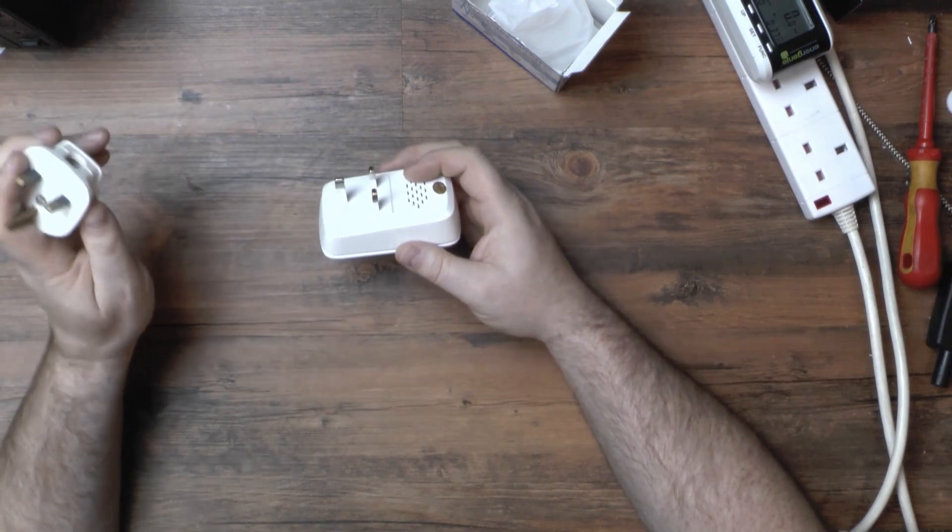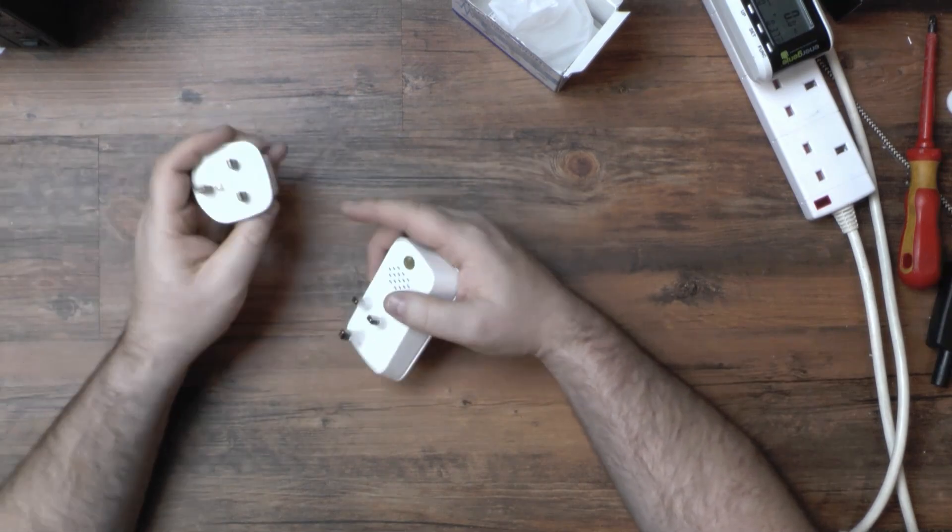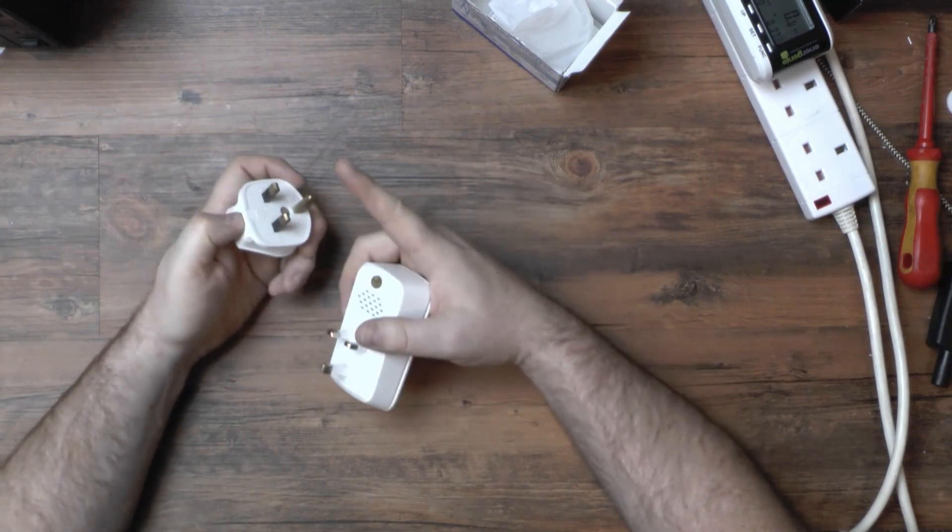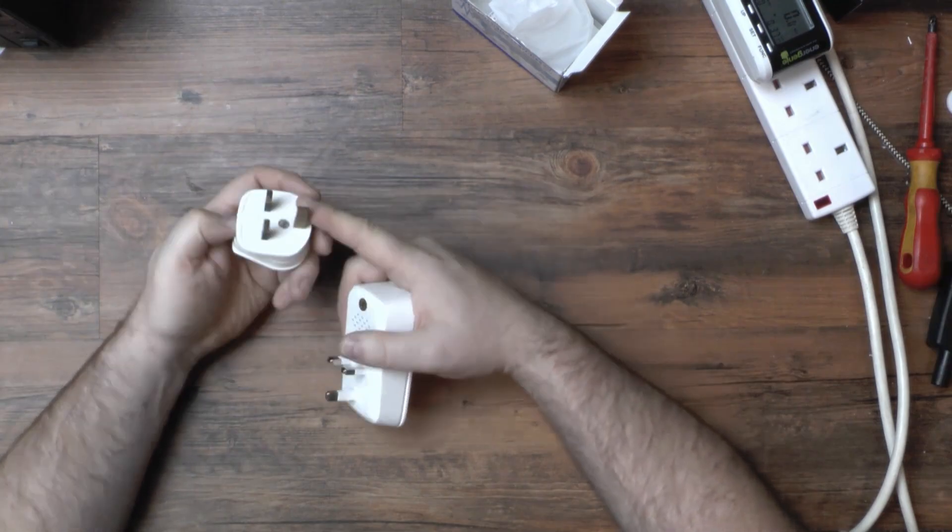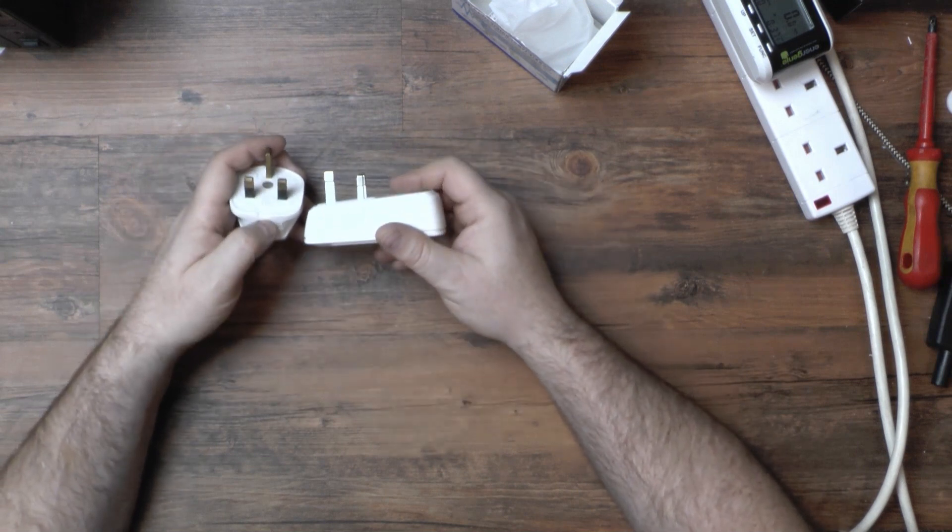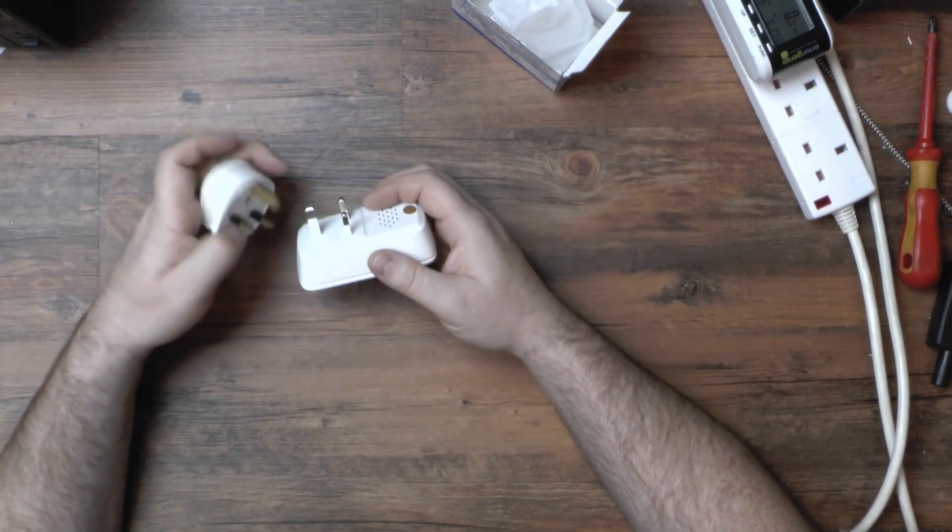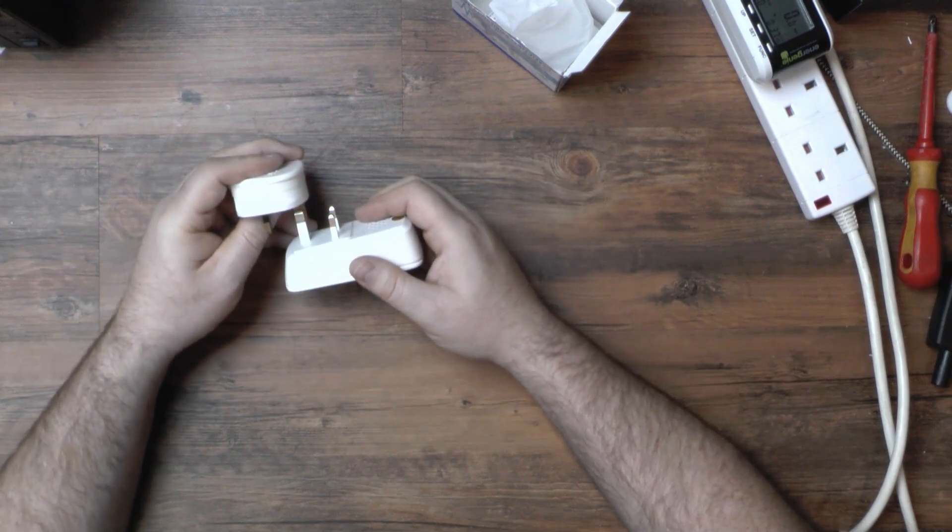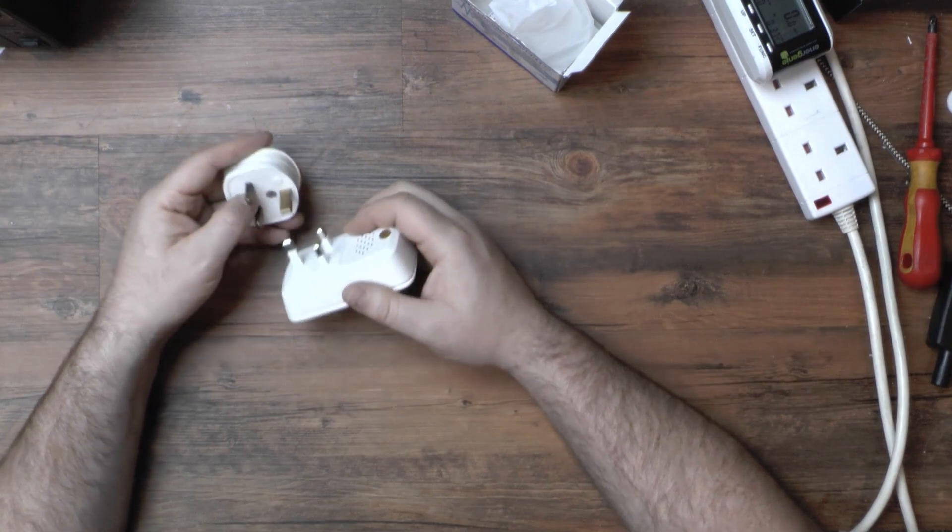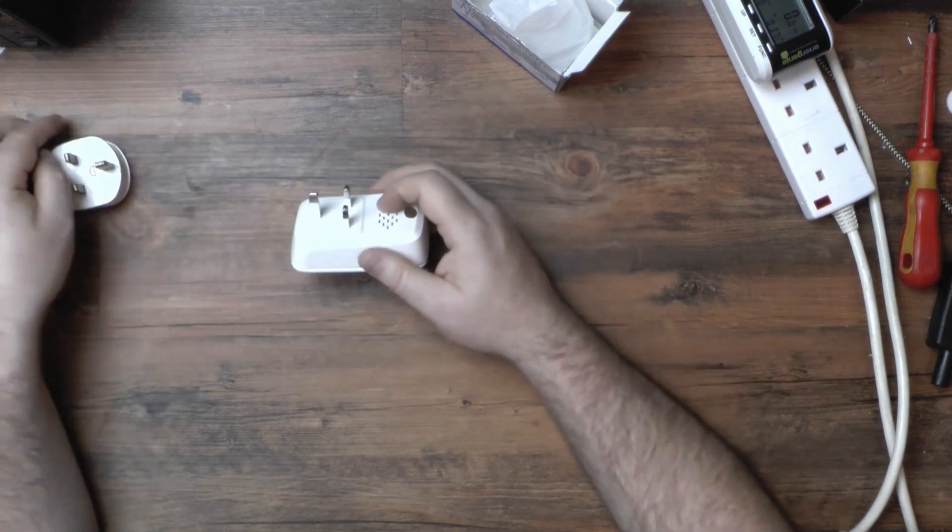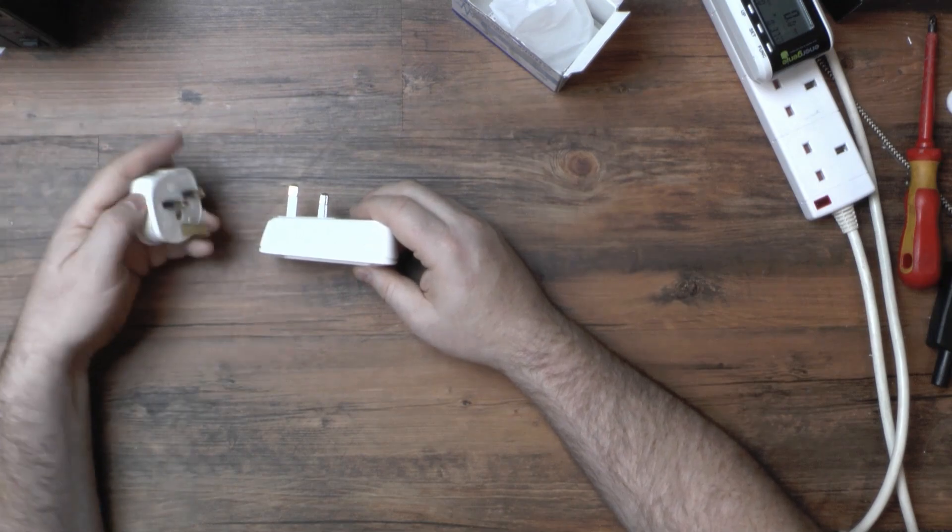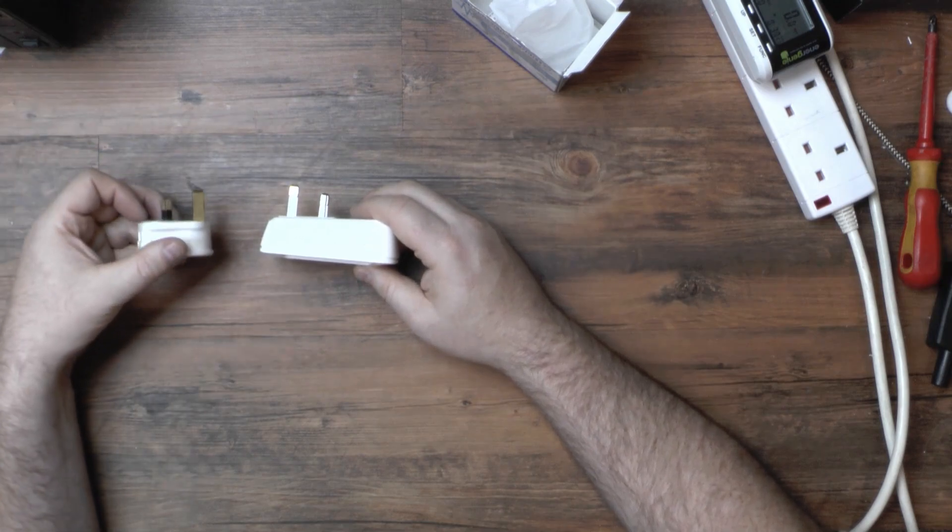For those of you not in the UK, this is what a normal mains plug would look like for the UK with the shrouded pins, not a shrouded earth pin, and the earth pin is bigger than the rest. You can see where these, although the earth pin is longer than the rest, it's actually not the correct thickness and the pins are also all angled. They're supposed to be all straight.